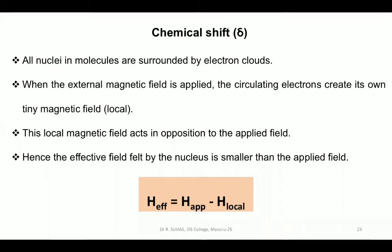We all know that all nuclei in molecules are surrounded by electron clouds. If there is any nucleus, it is surrounded by revolving electrons. When you keep that nucleus in an external magnetic field, the circulating electrons create their own tiny magnetic field, which I will call the local magnetic field. When this local magnetic field is placed against an applied magnetic field, they will oppose each other. Hence, the effective field felt by the nucleus is smaller than the applied field.